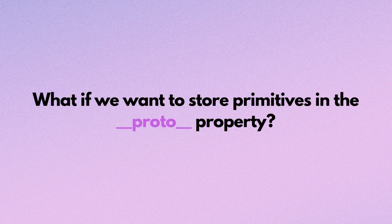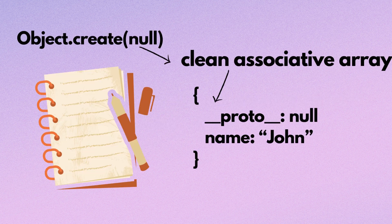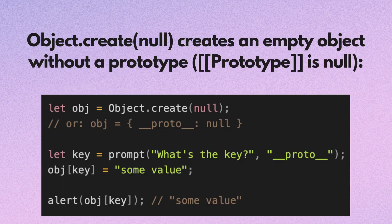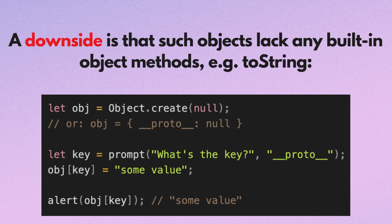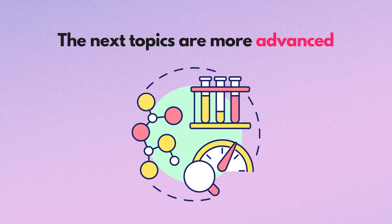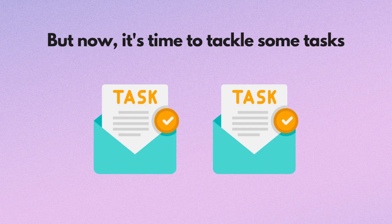What if we want to store primitives in the __proto__ property? It's really about using objects as clean associative arrays without anything else inside. Object.create(null) creates an empty object without a prototype. A downside is that such objects lack any built-in object methods like toString. The next topics are more advanced, so feel free to skip them unless you really want to become proficient in the subject — they are usually not asked in interviews. But now it's time to tackle some tasks based on the information we've covered so far.